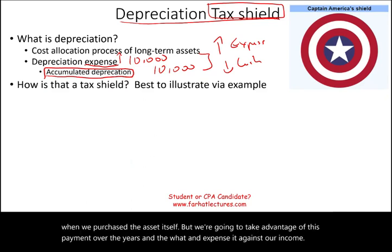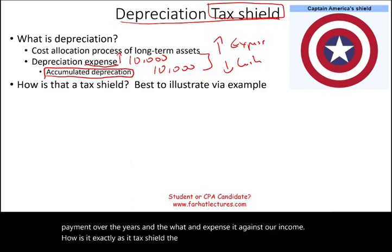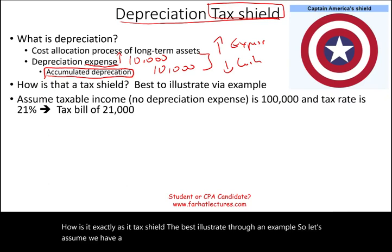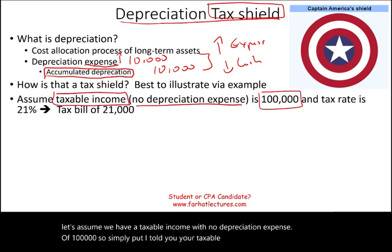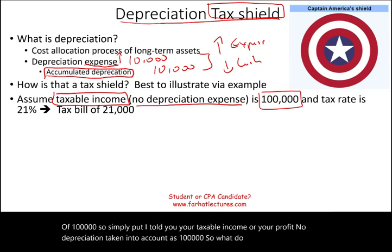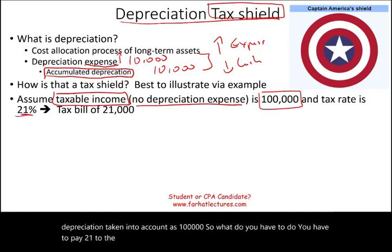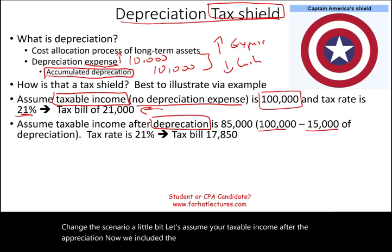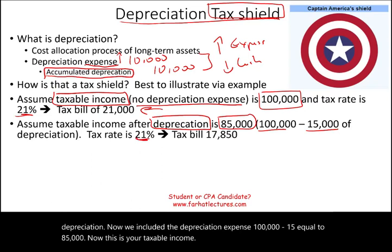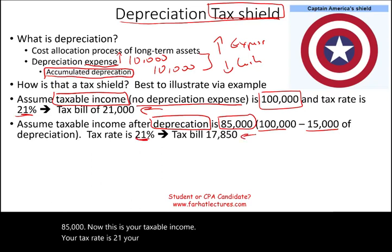How is depreciation exactly a tax shield? Let's illustrate with an example. Assume taxable income with no depreciation expense is $100,000. You have to pay 21% to the IRS, so your tax bill is $21,000. Now let's change the scenario: taxable income after depreciation is $100,000 minus $15,000, equal to $85,000. At a 21% tax rate, your tax bill is now $17,850.